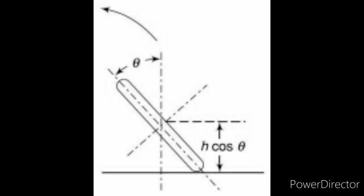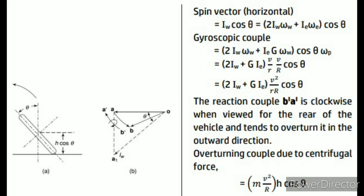In this figure, the axis of spin is not horizontal, but inclined to the vertical at an angle theta, and the axis of precession is vertical. So it is necessary to take the horizontal component of the spin vector. The spin vector horizontal is equal to Iw cos theta, that is equal to 2Iw·omega_w plus Ie·omega_e, into cos theta. See figure b. The gyroscopic couple is equal to (2Iw·omega_w + Ie·omega_e)·cos theta into omega_p, which equals (2Iw + G·Ie) into V/r into V/R into cos theta.